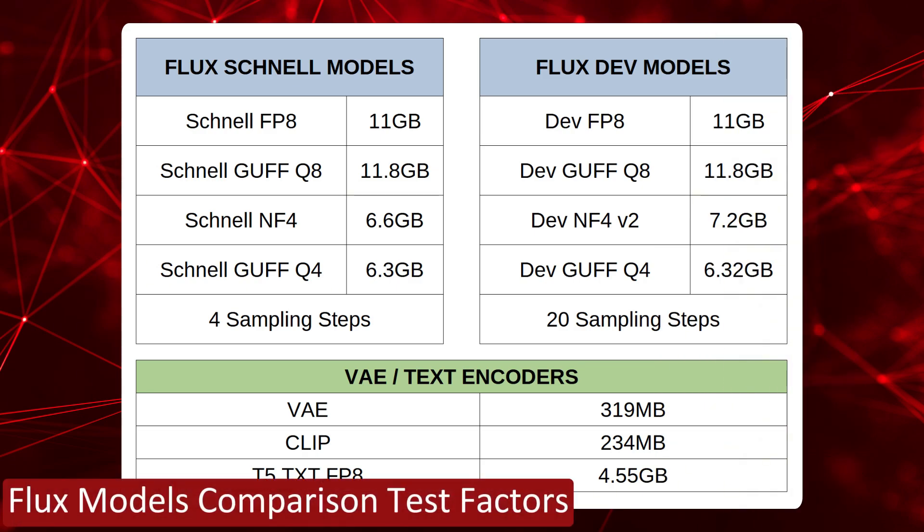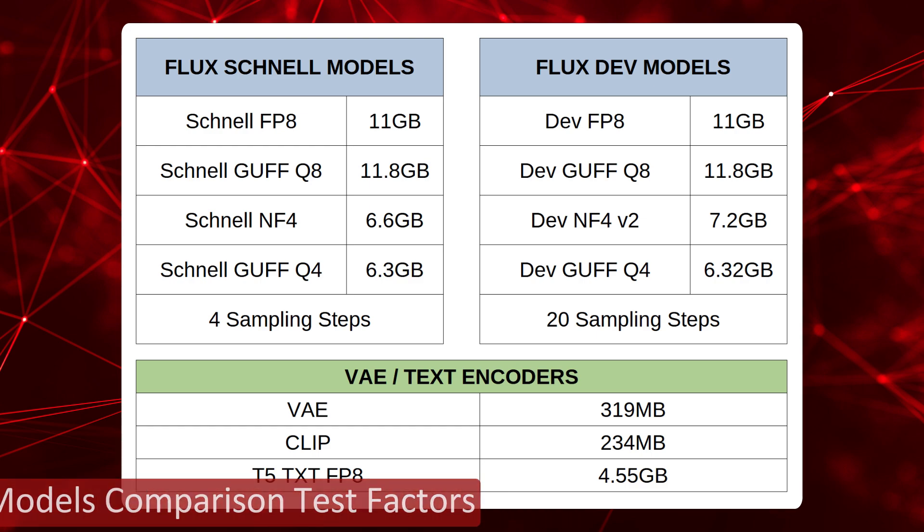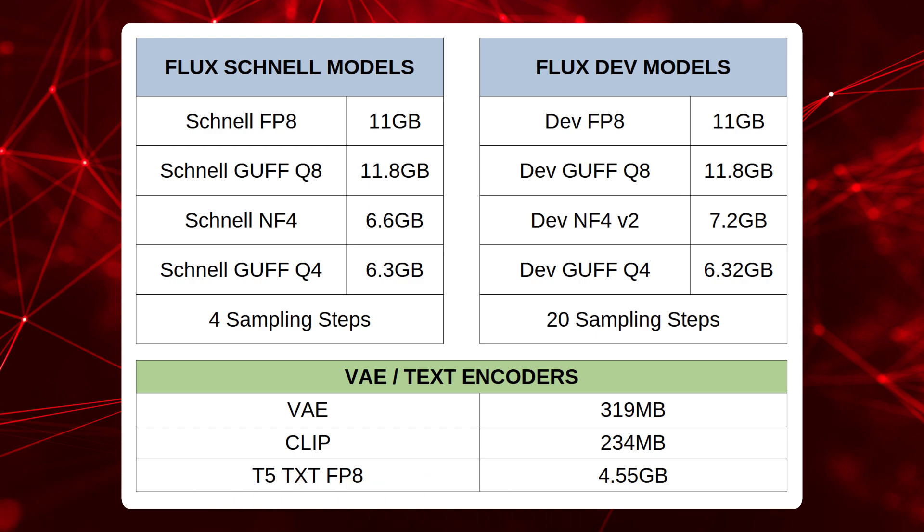The Schnell and Dev models I tested for comparison are the FP8, GUFQ8, NF4 and the GUFQ4. For all the models I used the standard VAE, CLIP and T5FP8 text encoders. I'll leave the links for all of these in the description below.